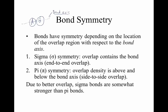The first kind of bond symmetry is called sigma symmetry, given the lowercase Greek letter sigma. In that case the overlap contains the bond axis. For example, if we have two hydrogen 1s orbitals, the bond axis runs through the middle of the two nuclei and the overlap contains that bond axis. It's almost like you've skewered or shish-kebabed these orbitals with that bond axis. I call that end-to-end overlap because the end of one orbital is smooshed into the end of the other orbital.